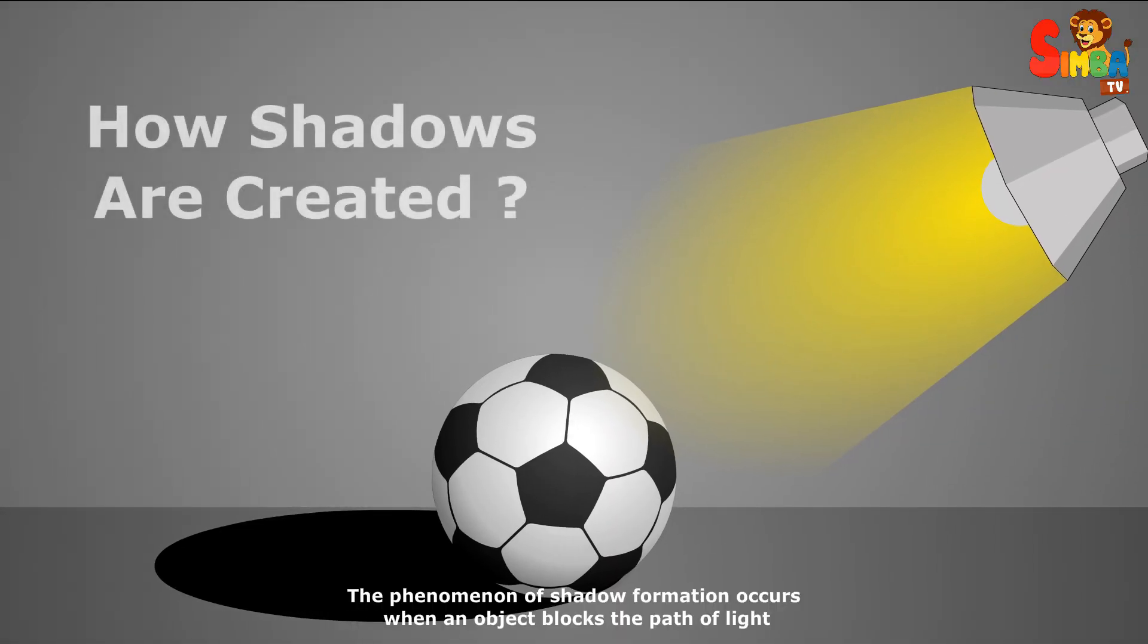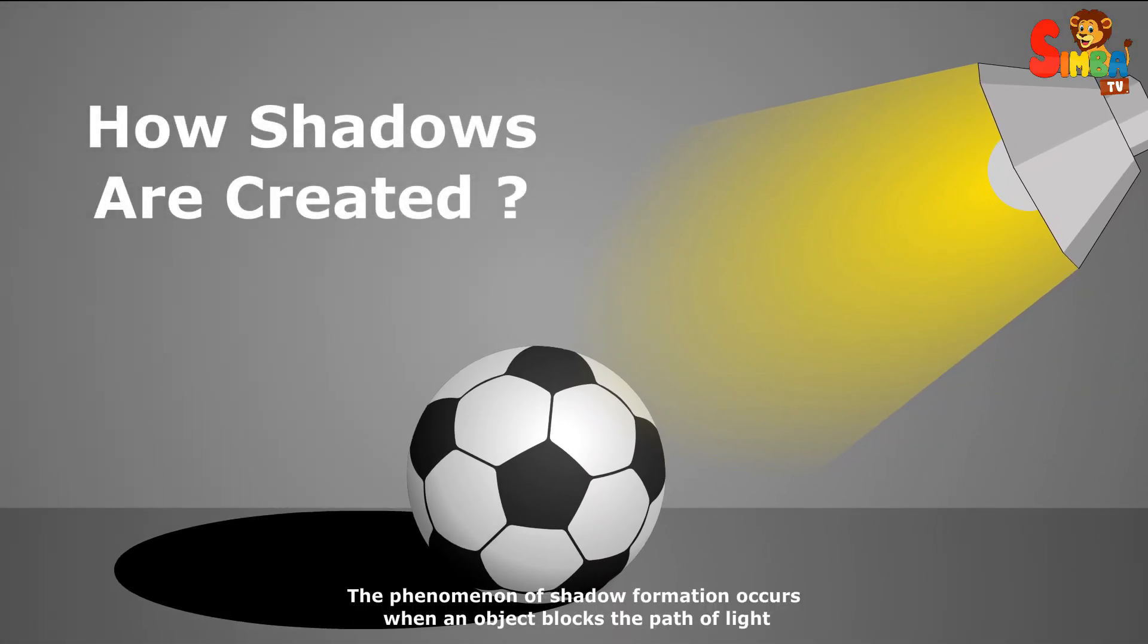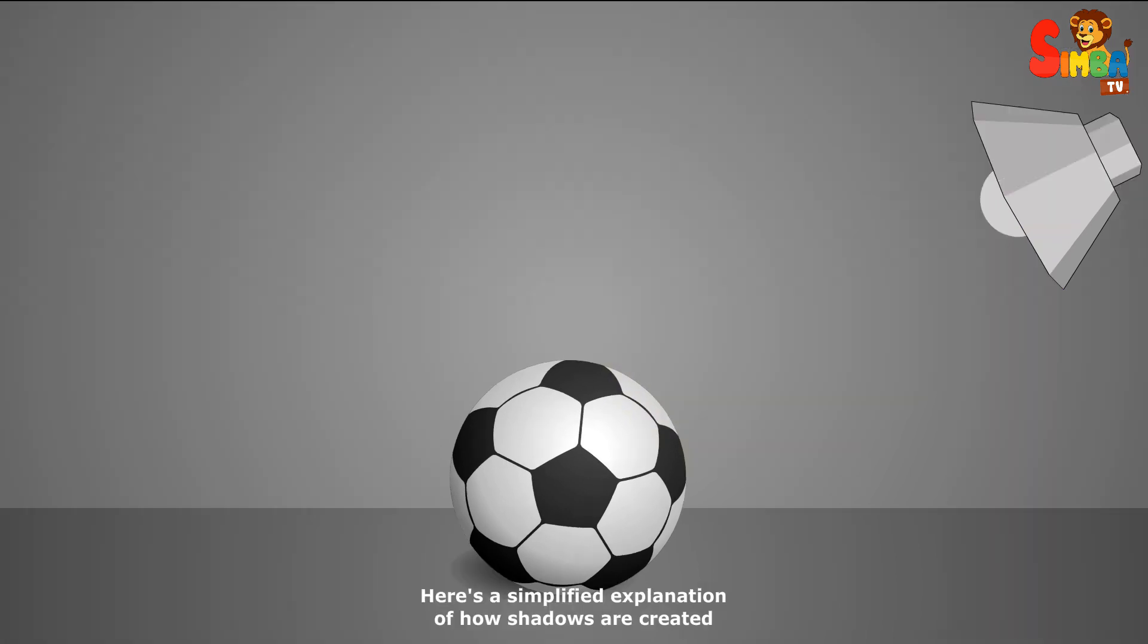The phenomenon of shadow formation occurs when an object blocks the path of light. Here's a simplified explanation of how shadows are created.